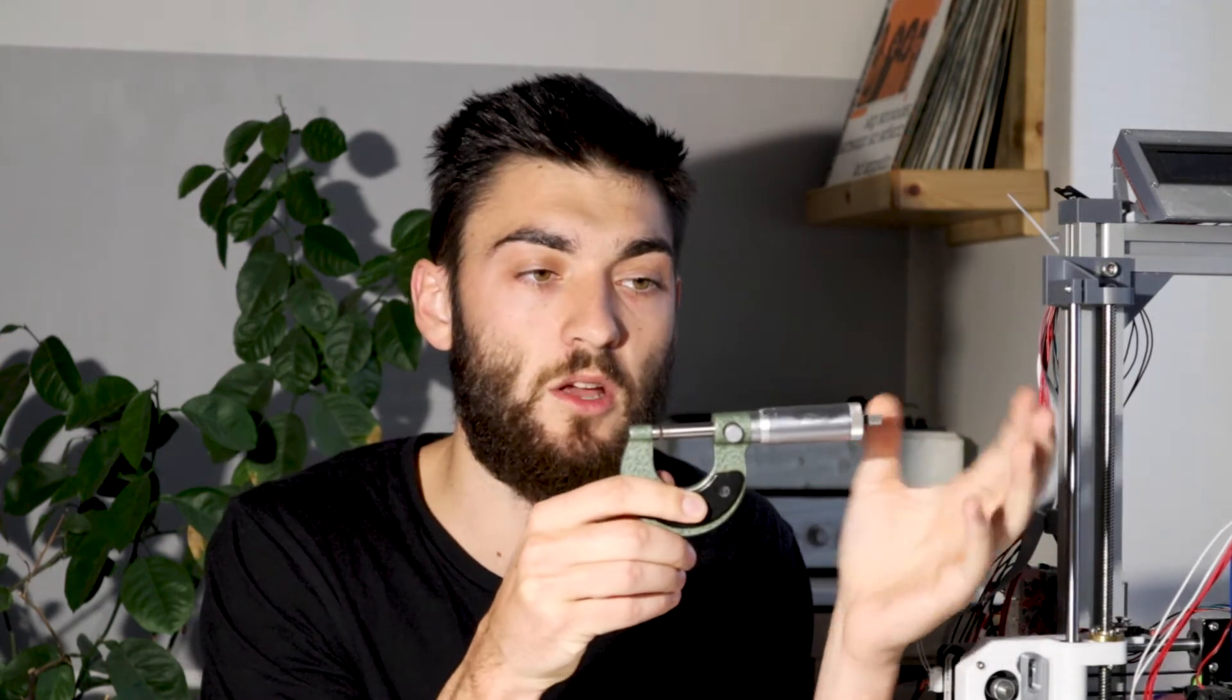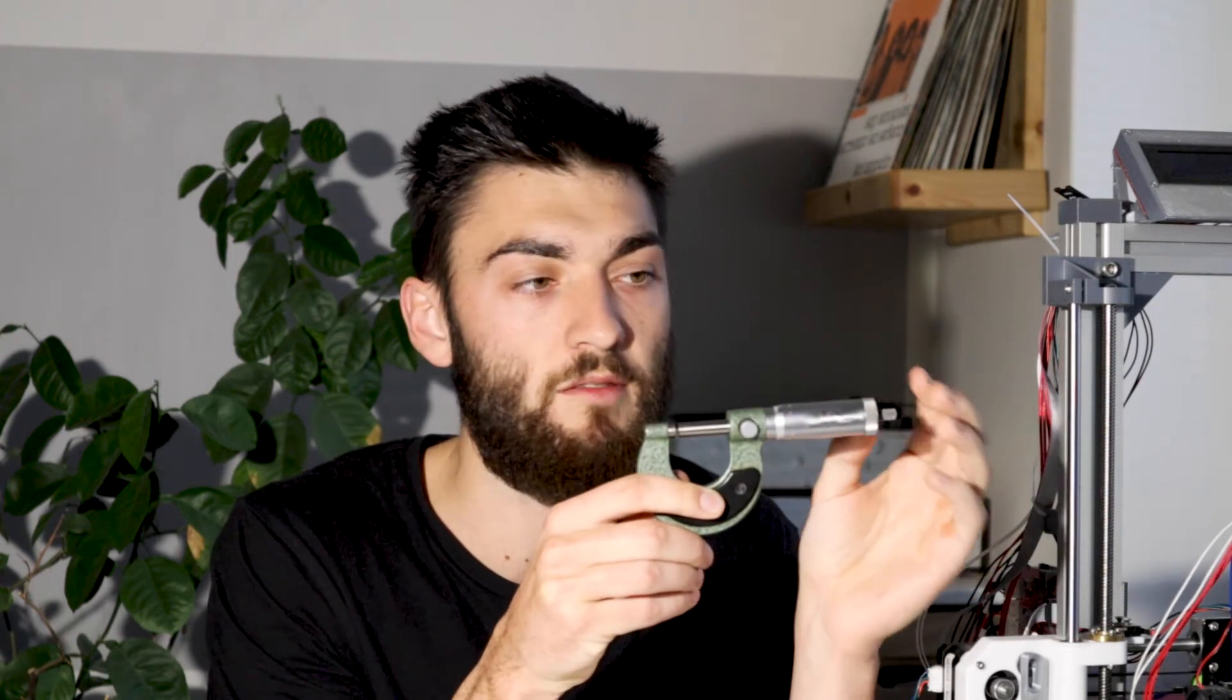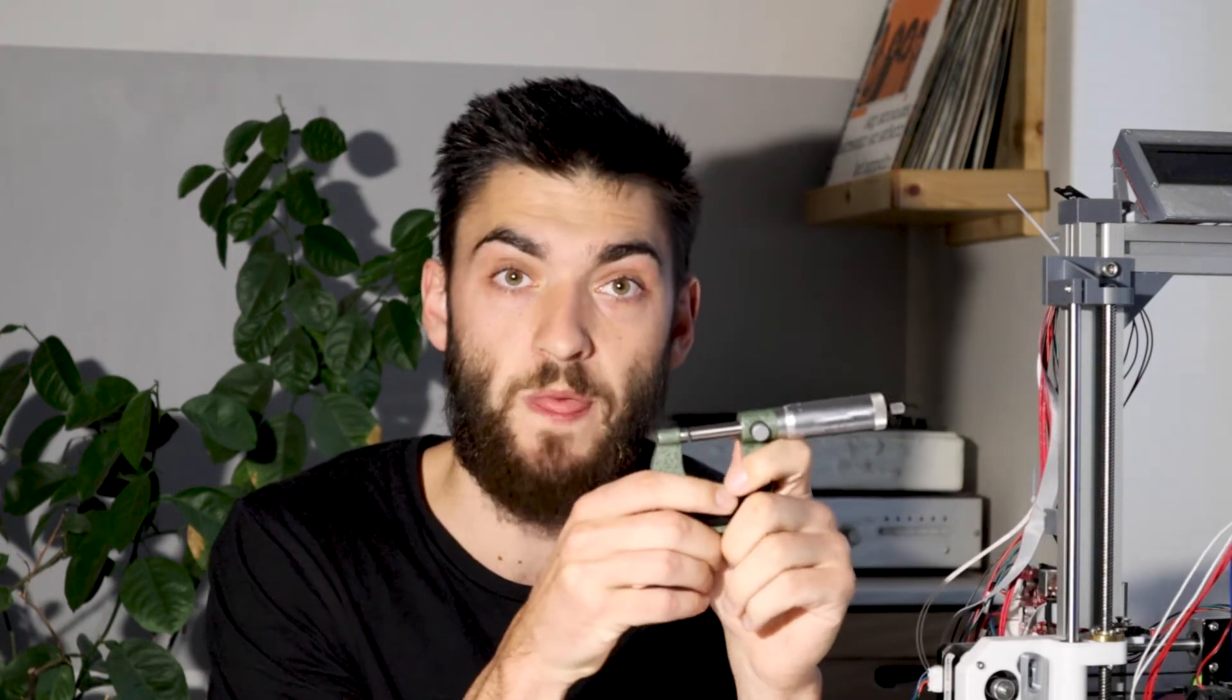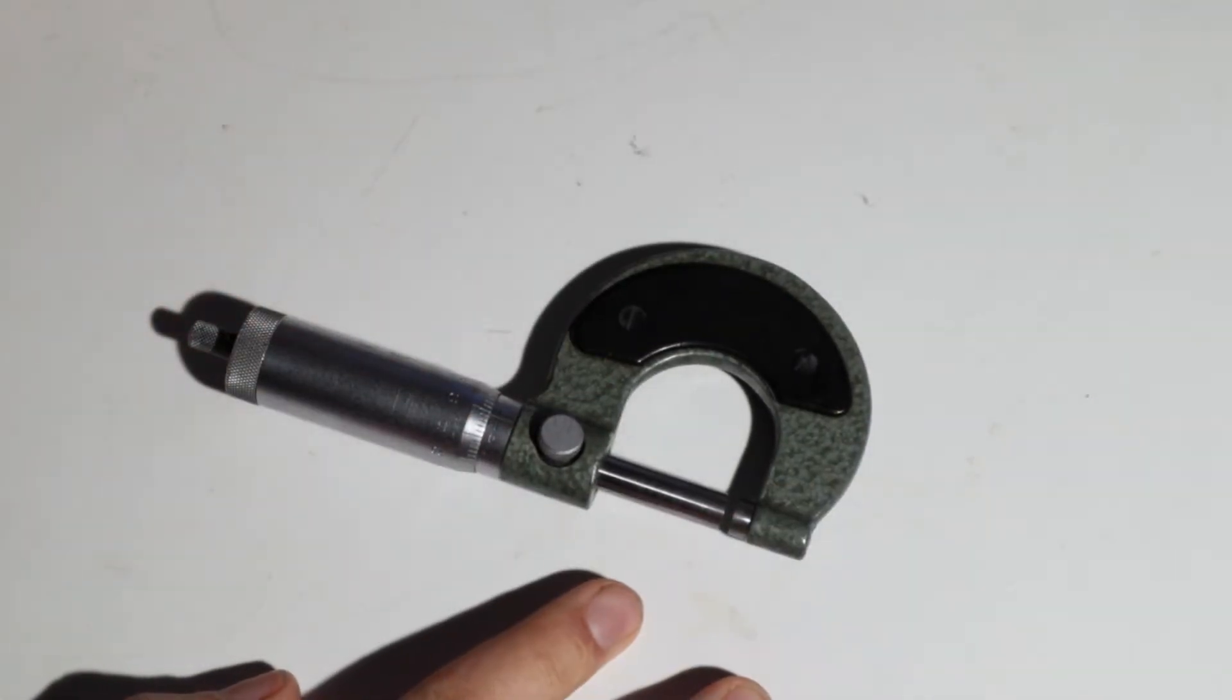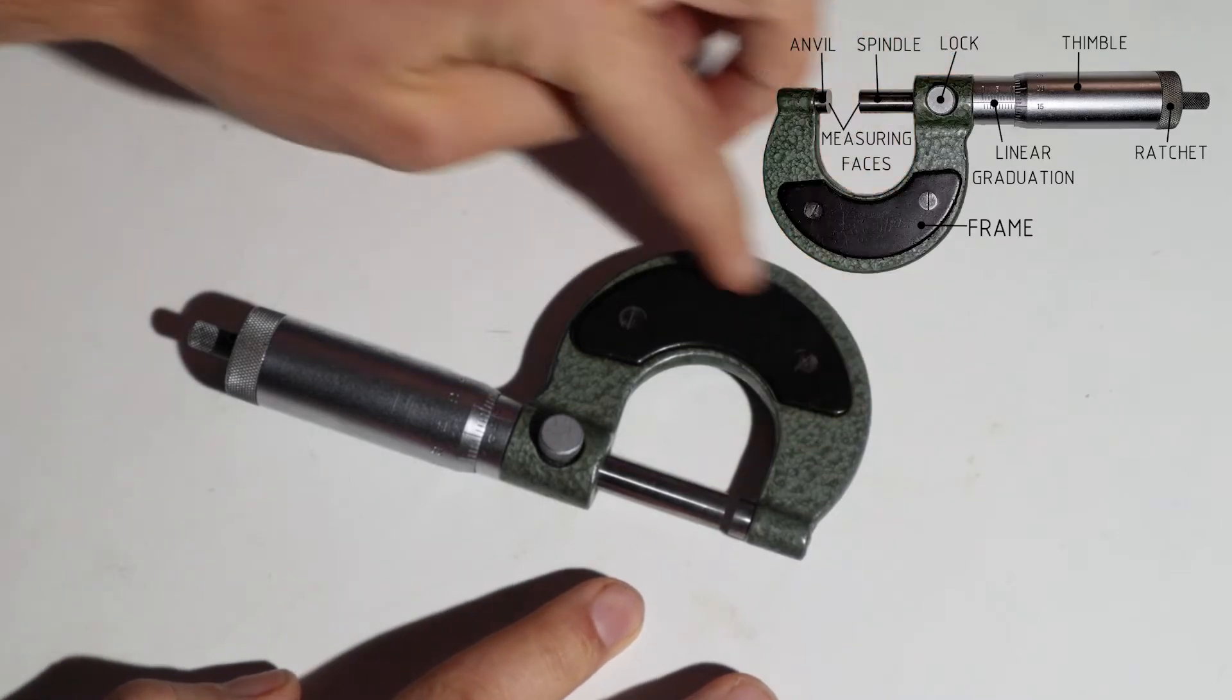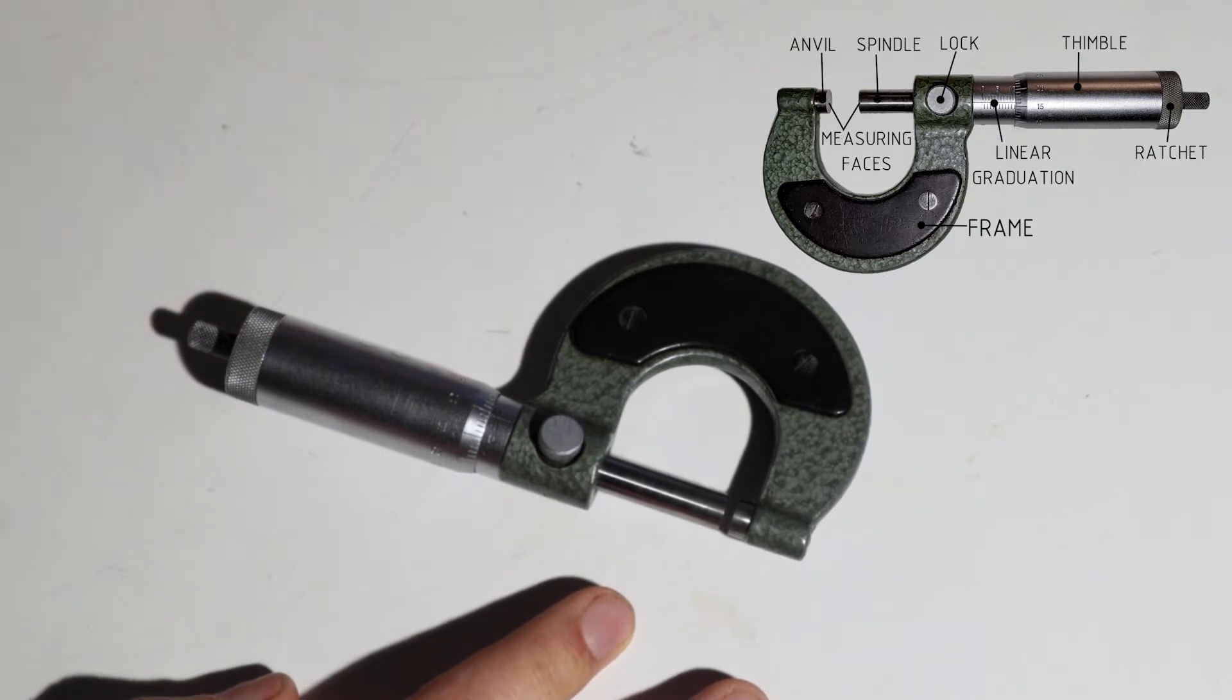So let's now have a quick look at how the micrometer is built and then we're gonna have a look at how to measure with the micrometer. Alright, so this is our 0 to 25 millimeter micrometer and it consists of several parts. This is the frame as we talked about. This varies from micrometer to micrometer depending on its size.